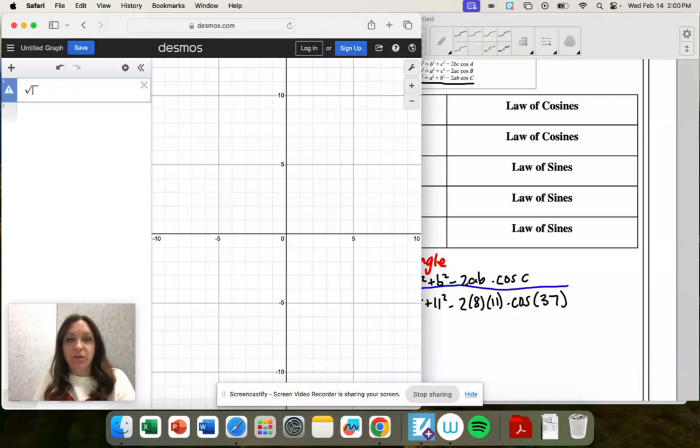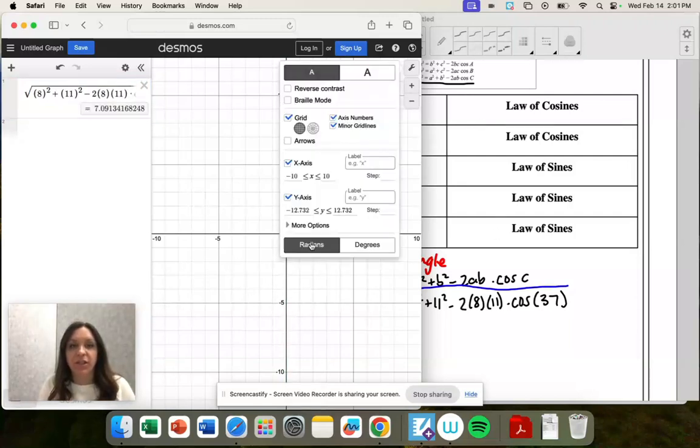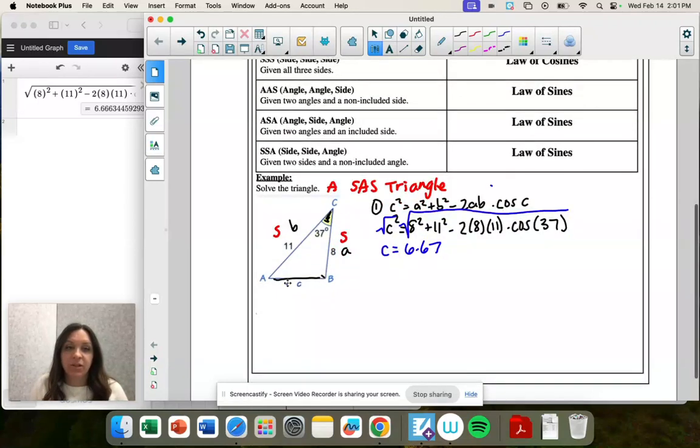When you're solving for the side, just square root it before you even put it in the calculator. So I have 8 squared plus 11 squared minus 2, 8, 11 times cosine of 37. And I'm going to make sure I'm in degrees. I'm not. Always make sure you're in degrees if you're talking about degrees. And I'm going to round this to 6.67. It's a lot of sixes.